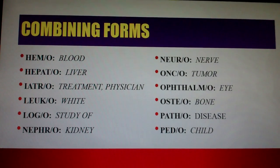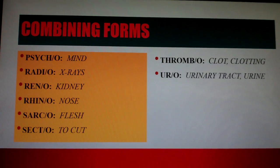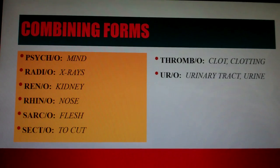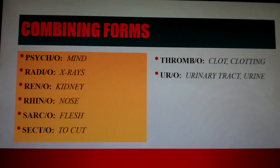Pedo means child. Psycho means mind. Radio means x-rays. Reno means kidney — remember there are two forms for kidney: Nephro and Reno, one is Greek and one is Latin, and they are used in different contexts. Rhino means nose. Sarco means flesh. Secto means to cut. Thrombo means clot or clotting. Uro means urinary tract or urine.